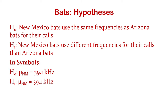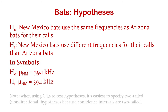When using confidence intervals to test hypotheses, a confidence interval is naturally two-tailed, so it's naturally easier to specify a two-tailed or non-directional hypothesis to test.